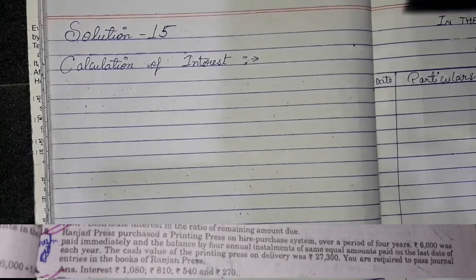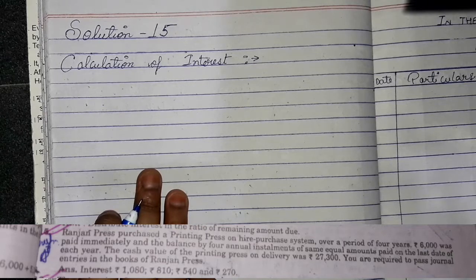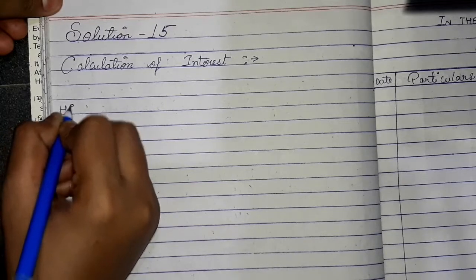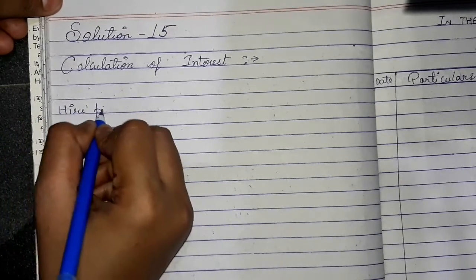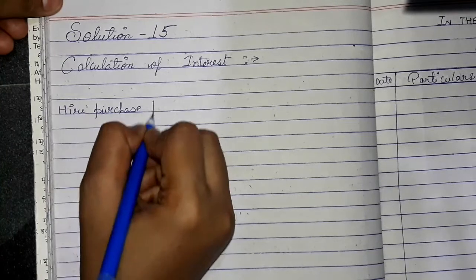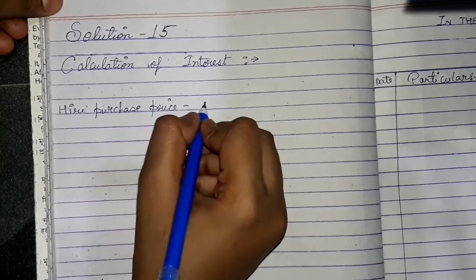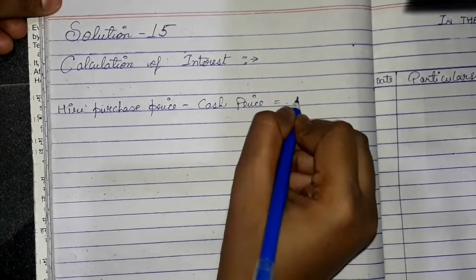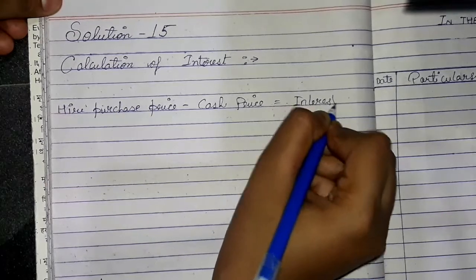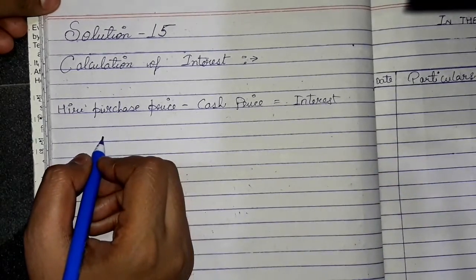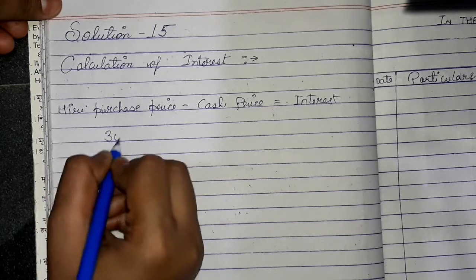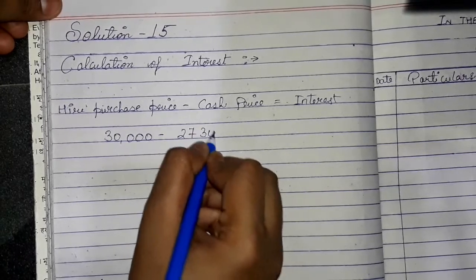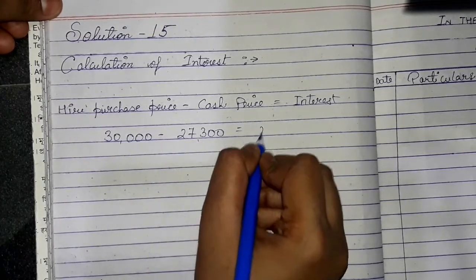We will minus the hire purchase price and cash price to find the total interest. The hire purchase price is 30,000 and the cash price is 27,300, so the interest comes to 2,700. This is our total interest.